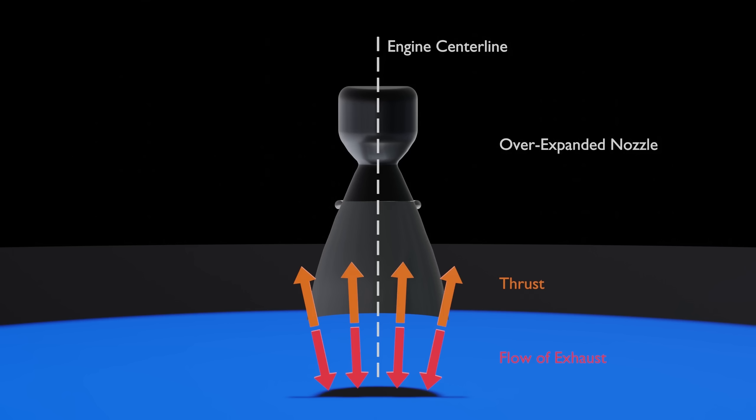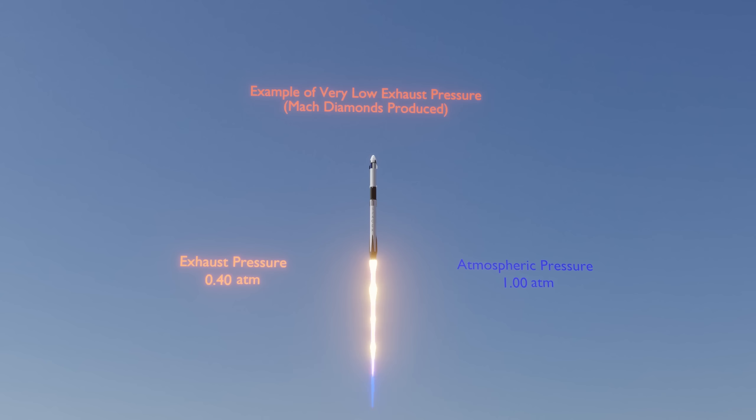The result of this is that the exhaust is no longer being projected straight down away from the rocket. This, in return, lowers the efficiency of each engine because remember, the exhaust projected straight down will push the rocket straight up with the same force. A sign of an over-expanded nozzle is the mock diamonds that are produced in the rocket's exhaust. This is where the exhaust pressure gets compressed and then expands over and over again as it interacts with the relatively high ambient air pressure.